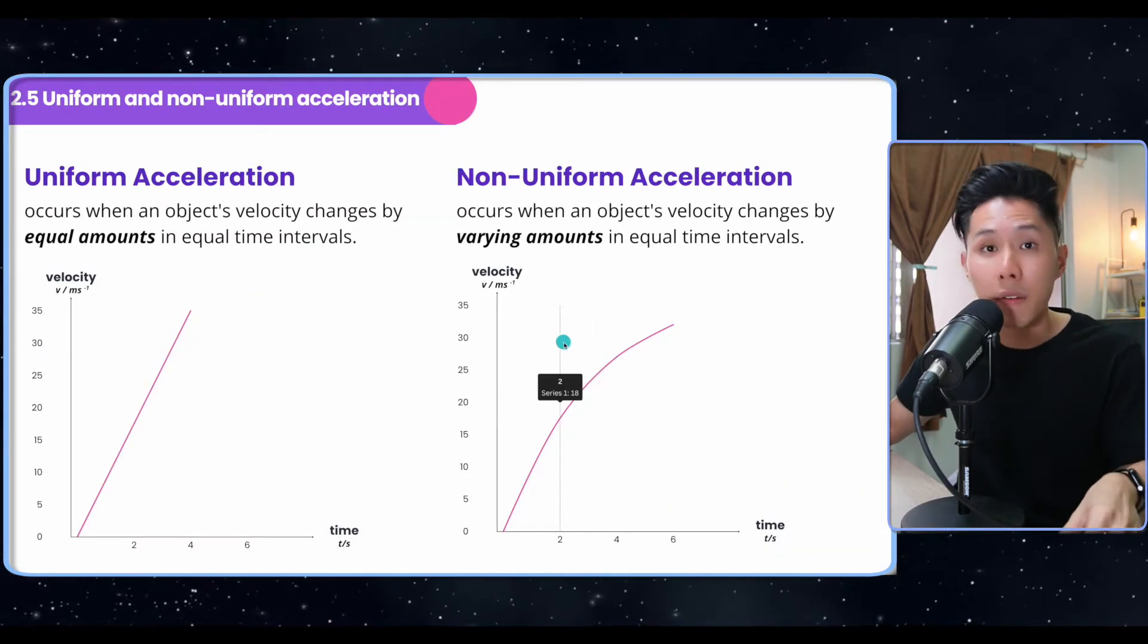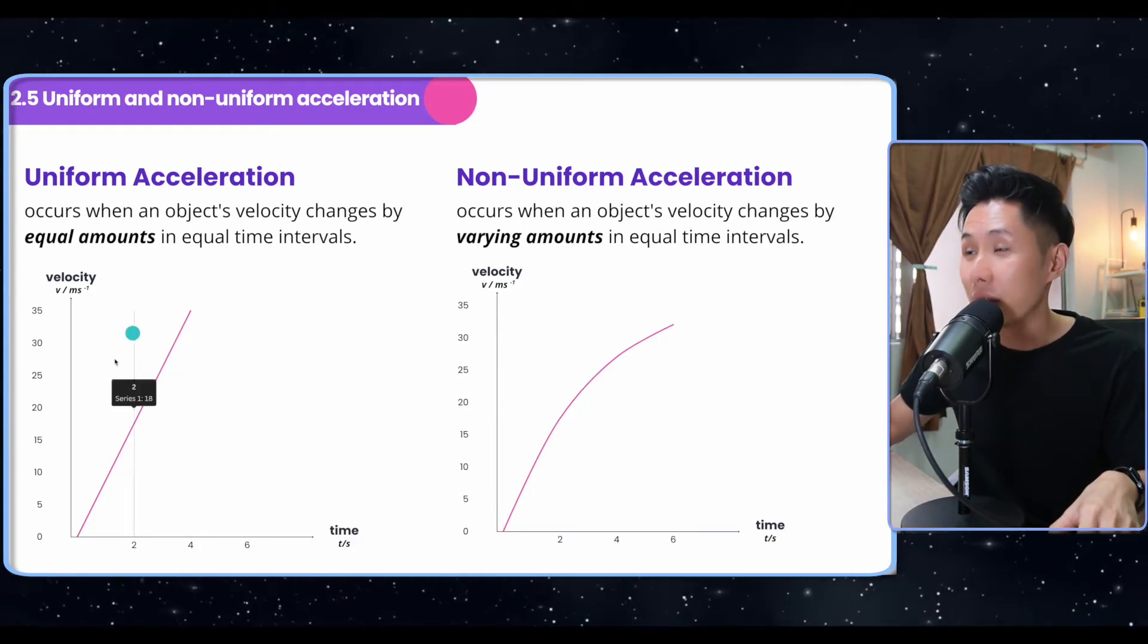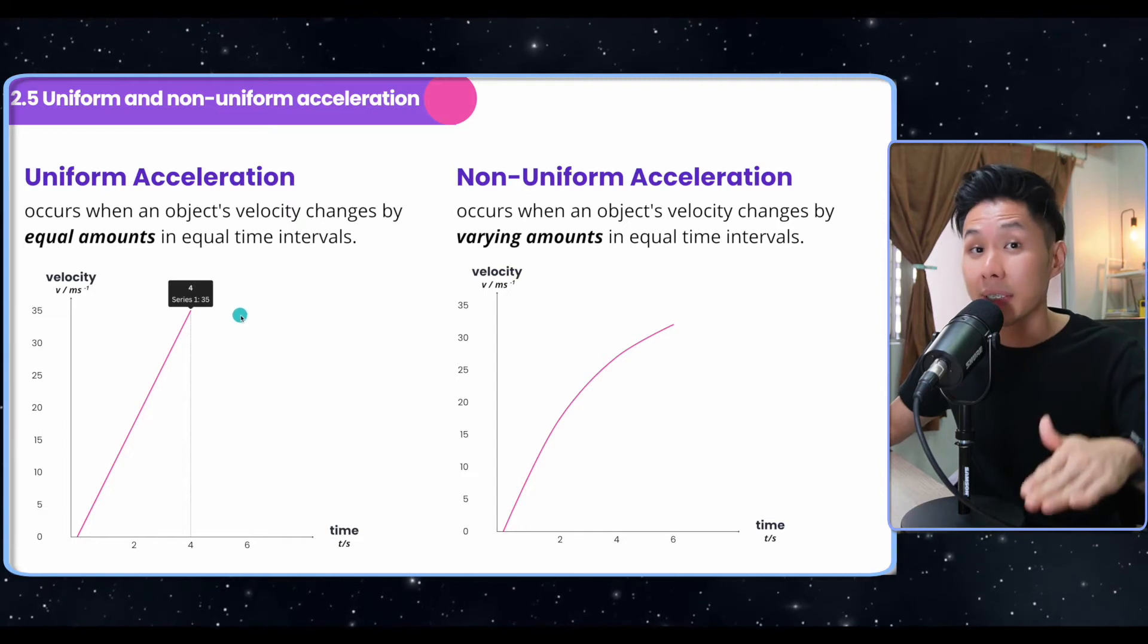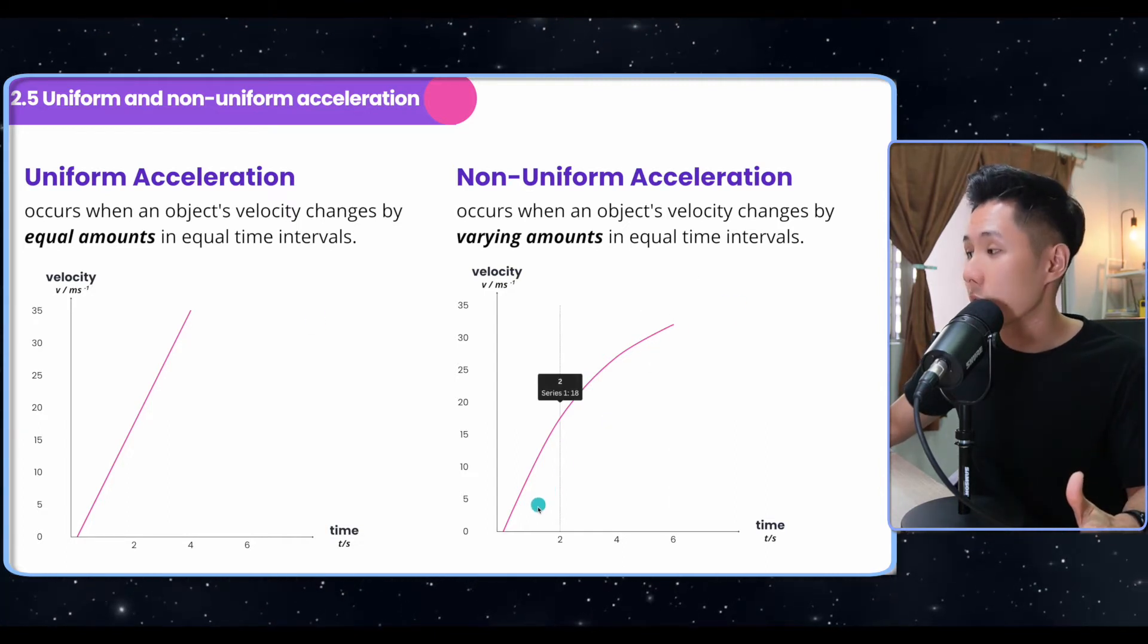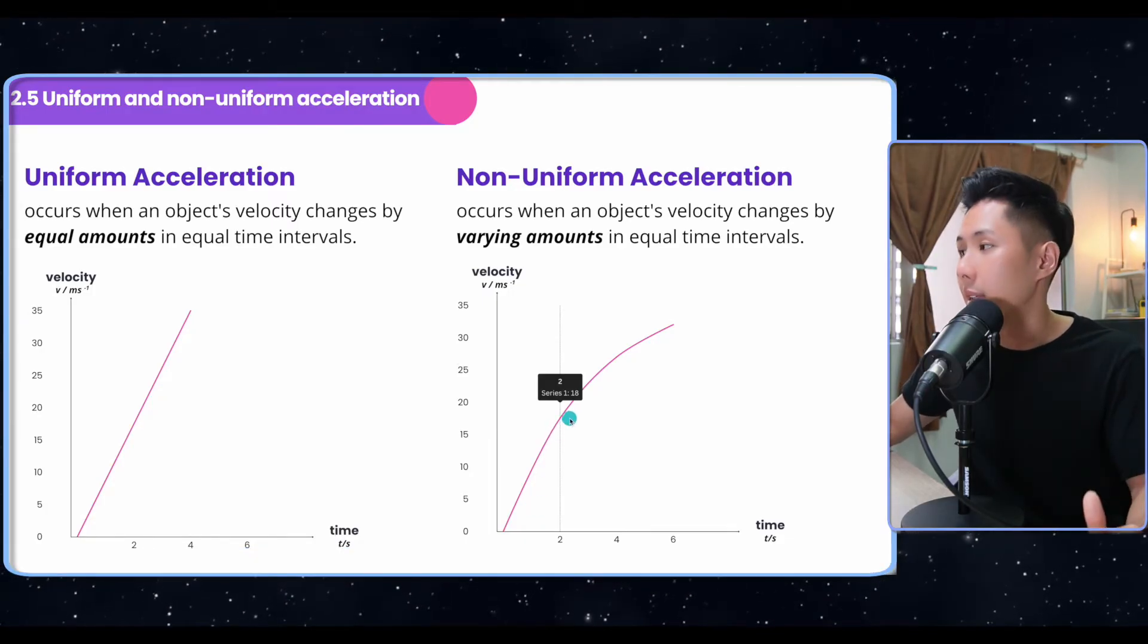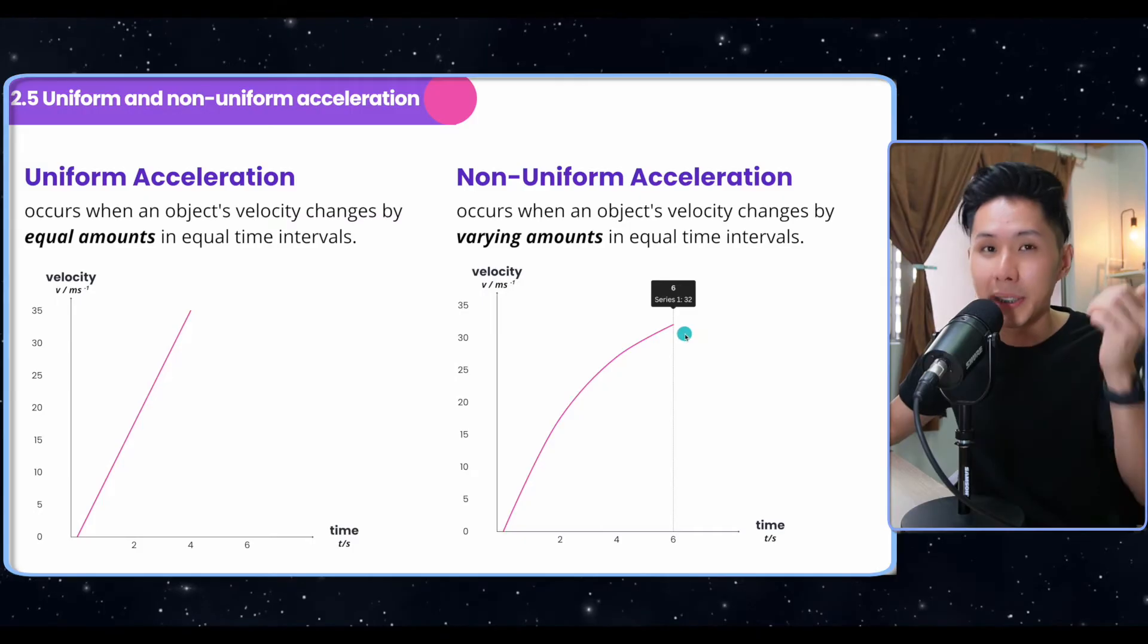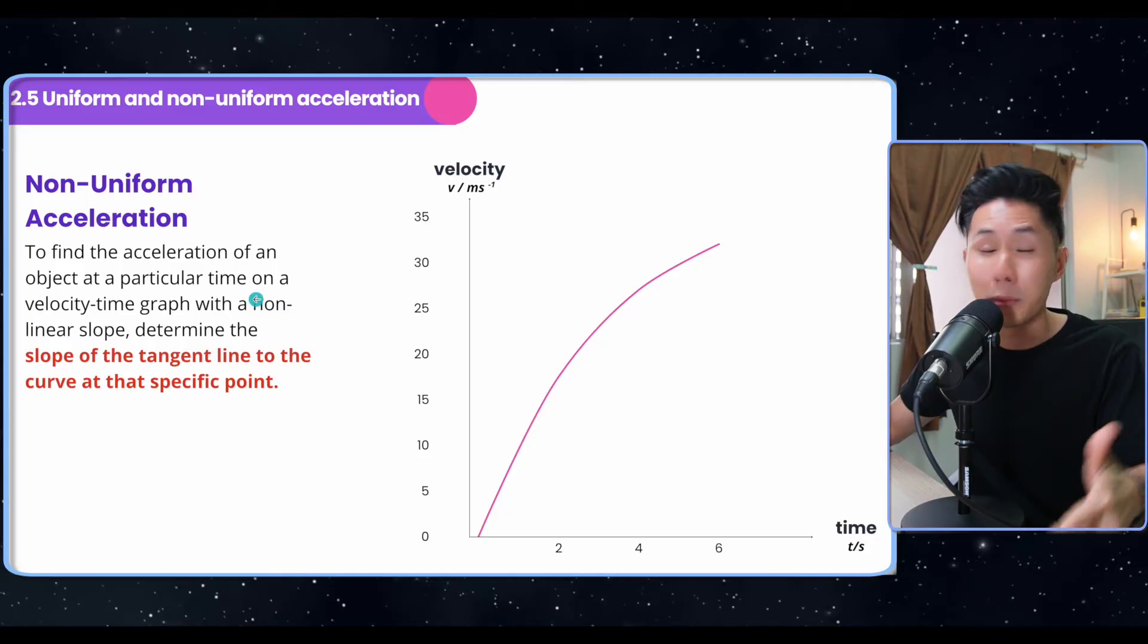Now, the next sub chapter is uniform acceleration versus non-uniform acceleration. So uniform acceleration in a velocity time graph, it will be a straight line. It means that the object is accelerating at a constant rate. Whereas non-uniform acceleration, you can see that in this graph here, they accelerate pretty quickly in the beginning, the gradient is pretty steep. But after that, the gradient gets lower and lower. This means that it is still speeding up, but speeding up at a slower rate.